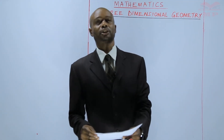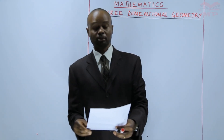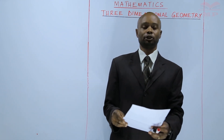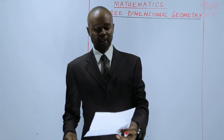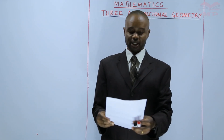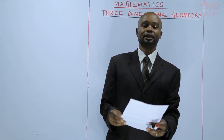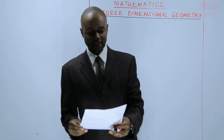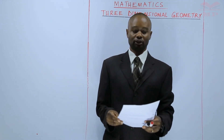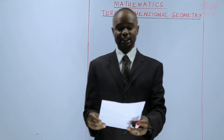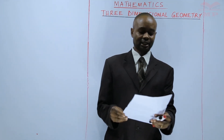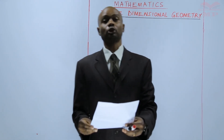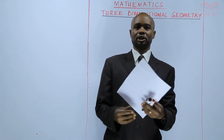The objectives: by the end of this lesson the learner should be able to state geometric properties of common solids, identify projection of a line onto a plane, identify skew lines, calculate the length between points in three-dimensional geometry, and identify and calculate the length between two lines, a line and a plane.